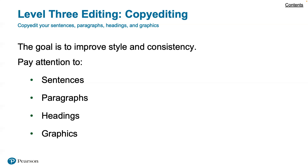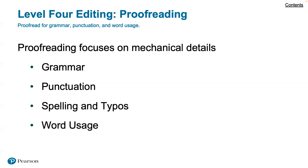That's the third level of editing. The final level is proofreading, which focuses on mechanical detail: grammar, punctuation, spelling and typographical errors, and word usage.